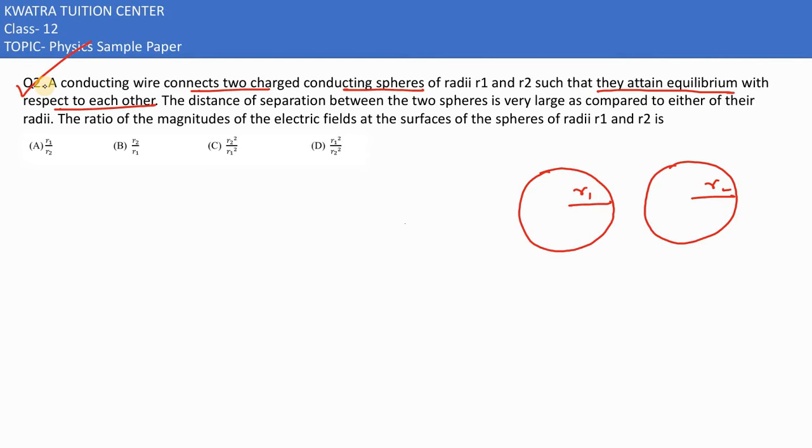That means the potential on surface 1 would be equal to sphere 2. The distance of separation between two spheres is very large as compared to either of their radii. If we compare the radii, the distance is much more.